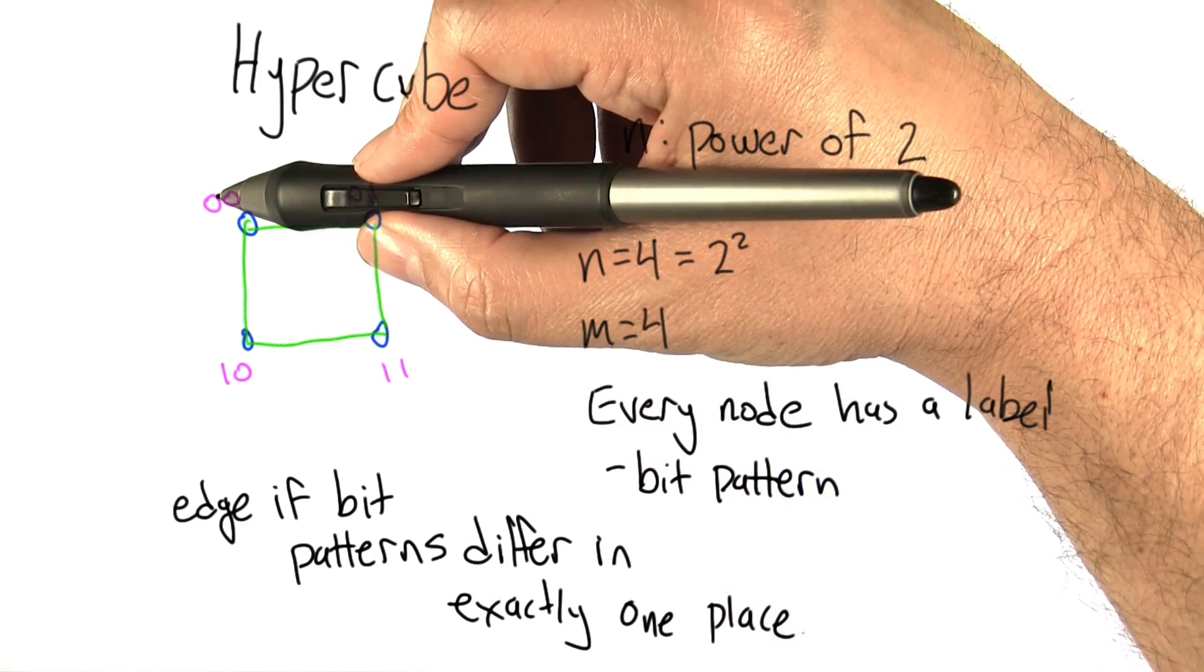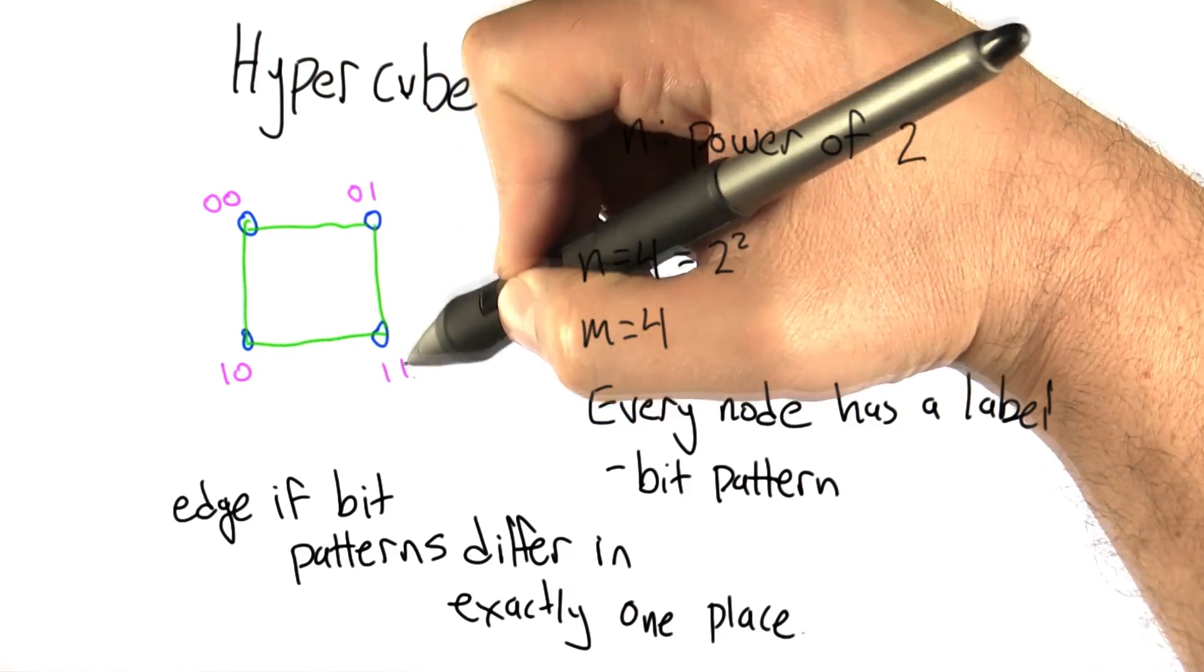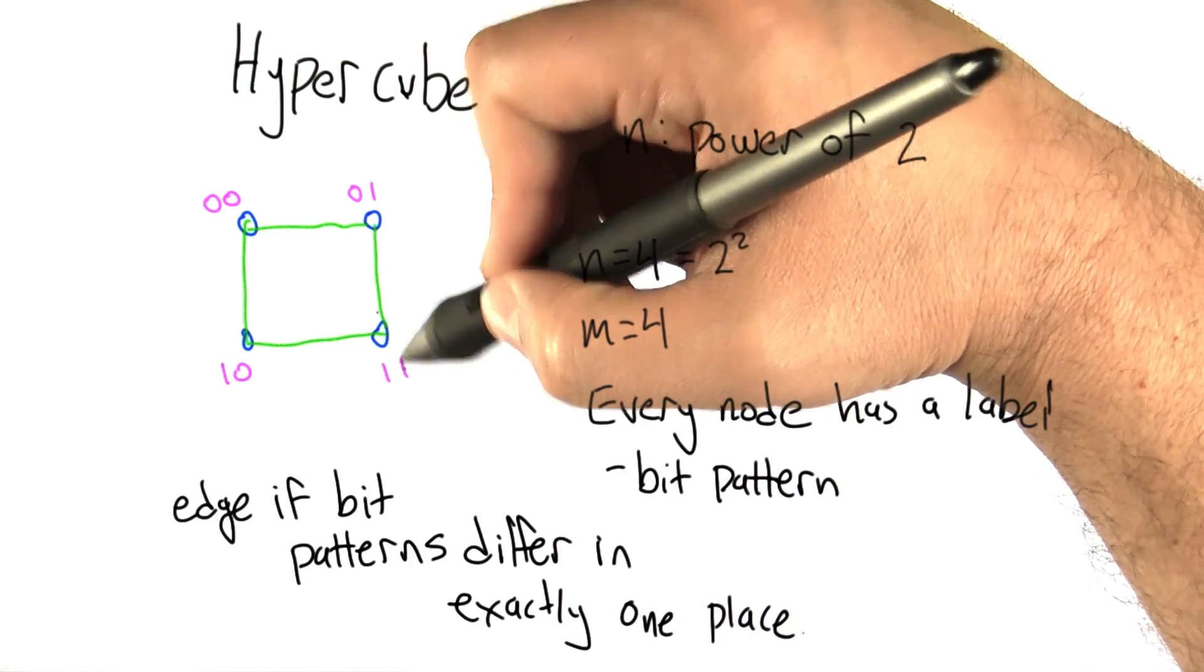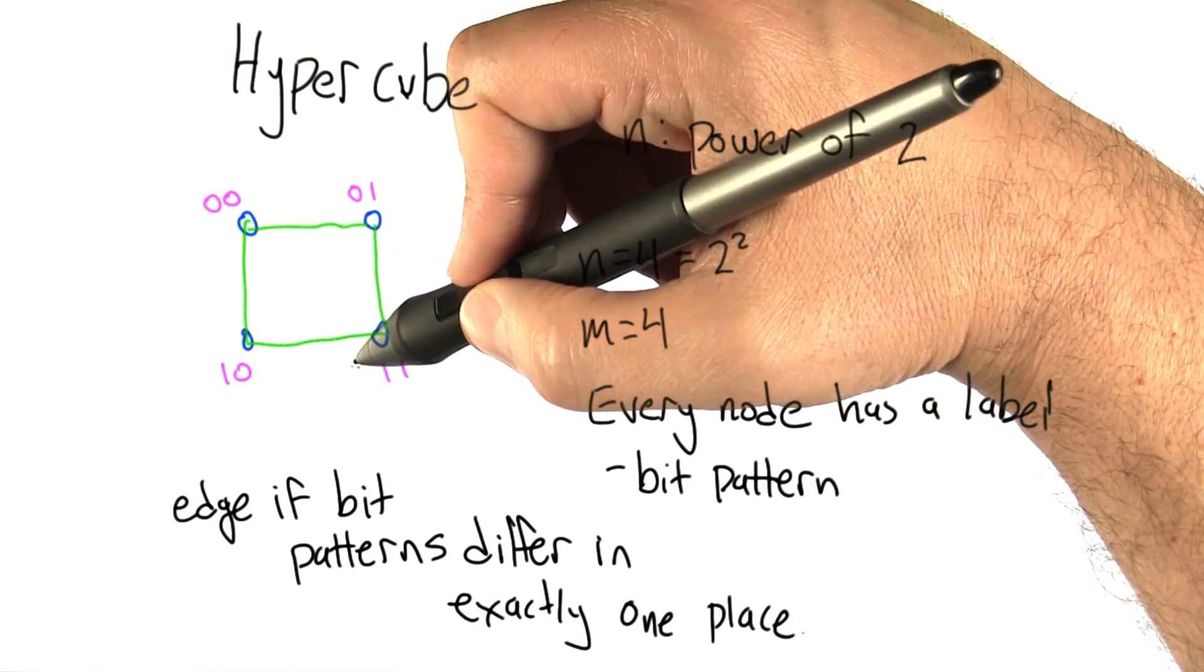We see this example here. If we label the nodes, these are now binary numbers 0, 1, 2, 3. We connect these two nodes because they differ just in the first bit: 1, 1, 0, 1. We connect these two because they differ in the second bit: 1, 0, 1, 1.